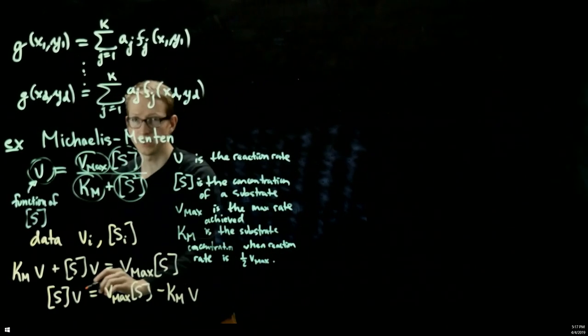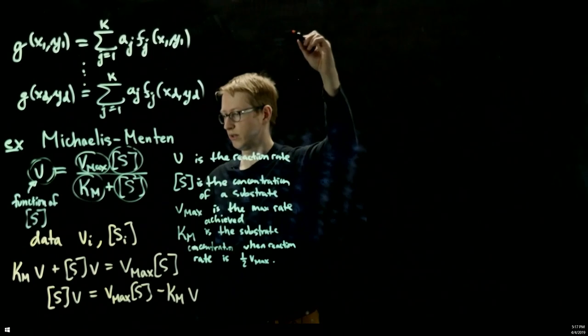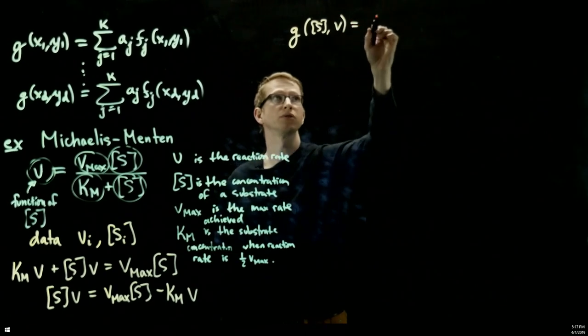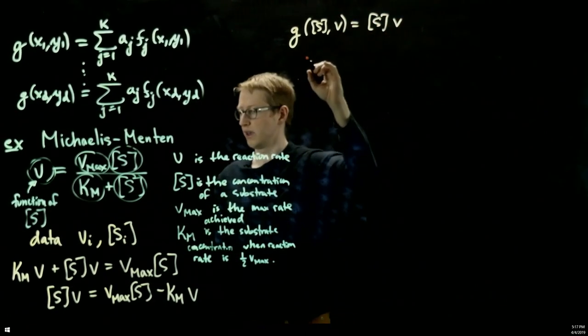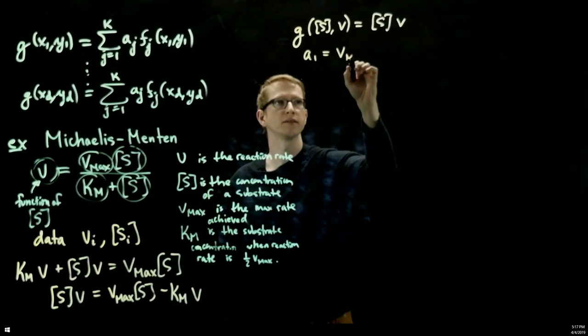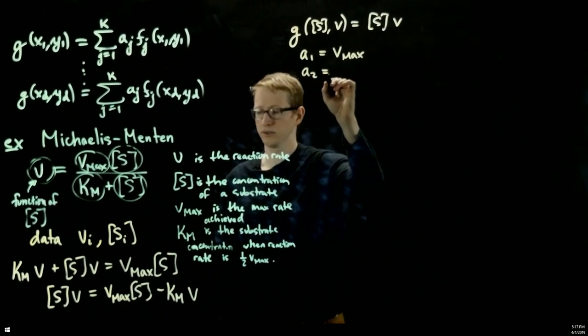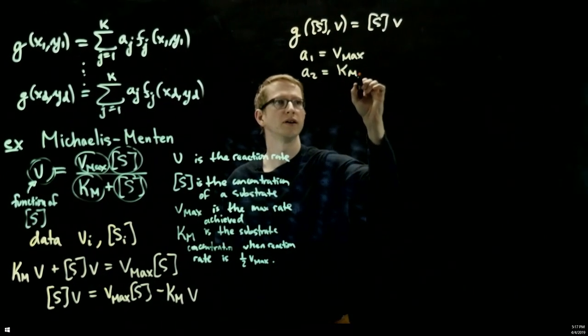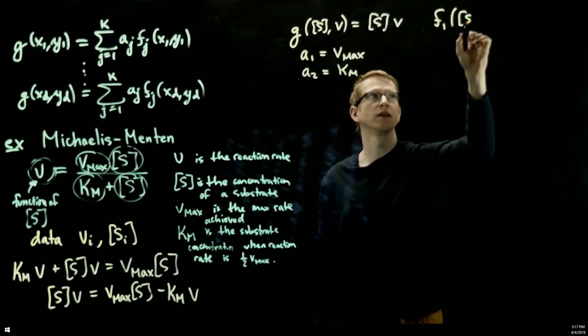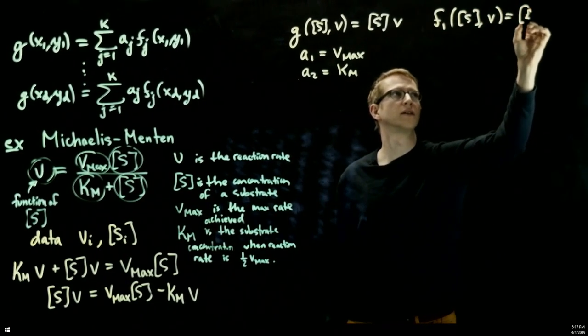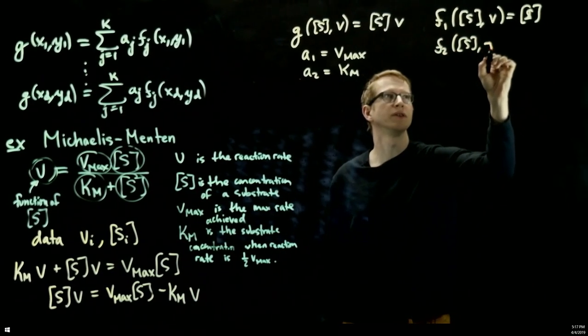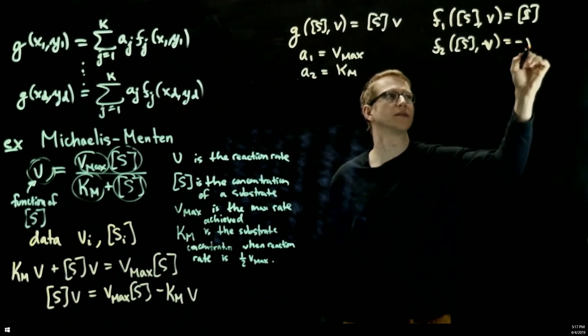And this is exactly in this form, where g here, we can identify g from this expression, g of sv equals just s times v, and a1 is vmax, a2 is kM, and f1 is just s, and f2 is negative v, that's positive, this is negative v.